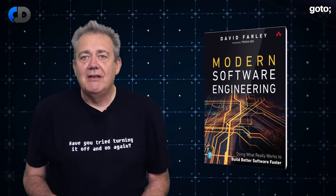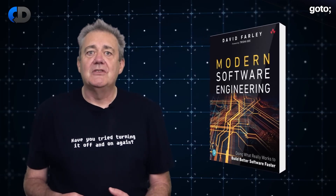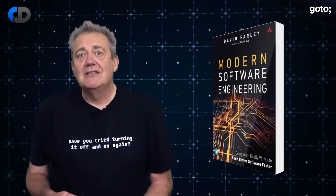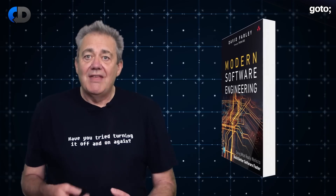My new book, Modern Software Engineering, is doing rather well at the moment. Last week it was the bestseller in three separate categories on Amazon. It's aimed at describing a lightweight, science-inspired approach to software development that significantly improves our chances of delivering better software faster. From the review feedback so far, it's helping people to think differently about software development and think that maybe we can apply engineering-style thinking to software after all. Please do check out the links in the description below.